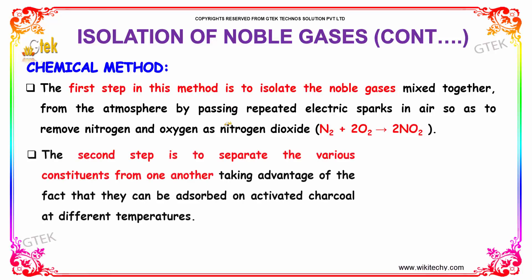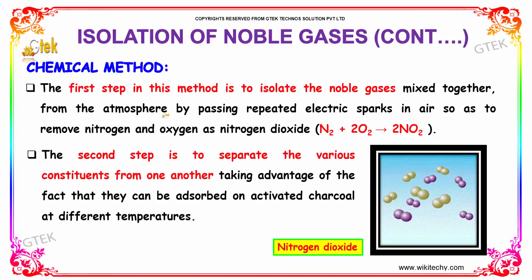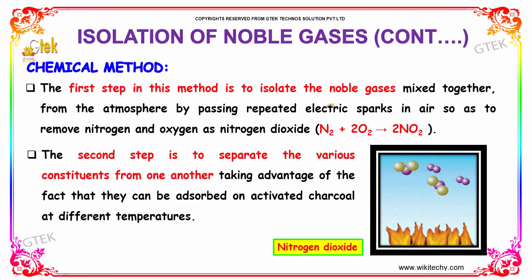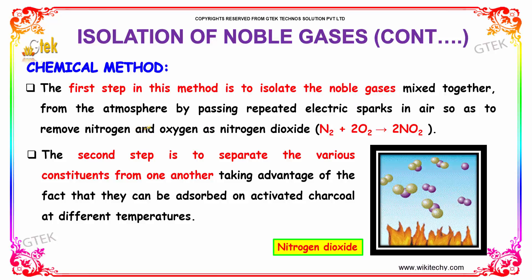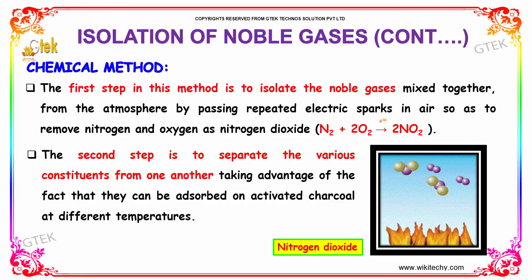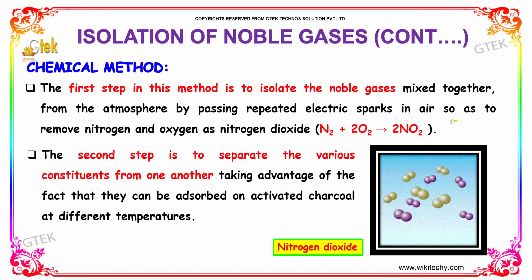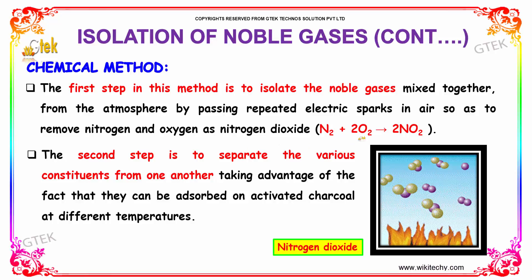The chemical method: the first step in this method is to isolate the noble gases mixed together from the atmosphere by passing repeated electric sparks in air, so as to remove the nitrogen and oxygen as nitrogen dioxide.